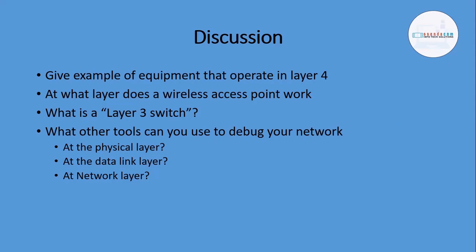For troubleshooting layer one problems, we use tools like the crimping tool for terminating cables and punch-down tools for fixing wall socket issues. Next time we meet, images of layer one troubleshooting tools will be shown on screen. On layer two, you look at the switch and scan the network to solve problems. On the network layer, you use ping — which we'll learn later — to check if something is working. We'll start from here next time and show images to continue from there.